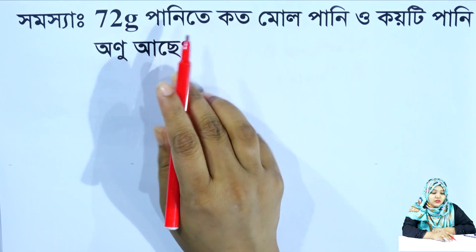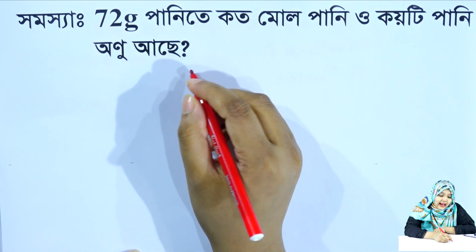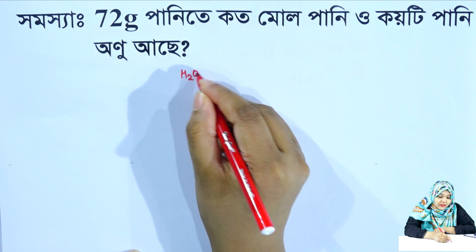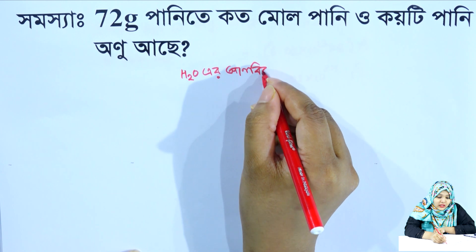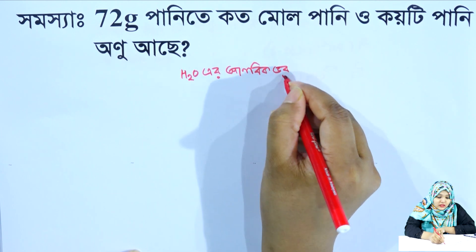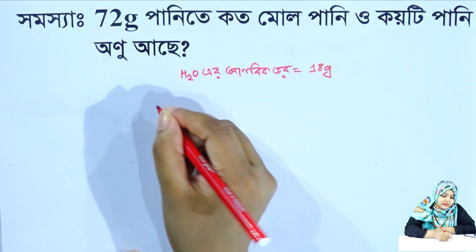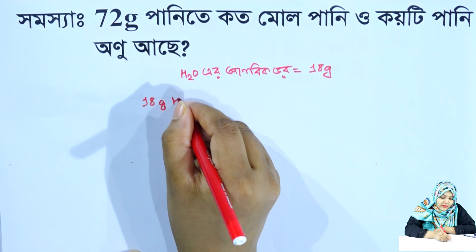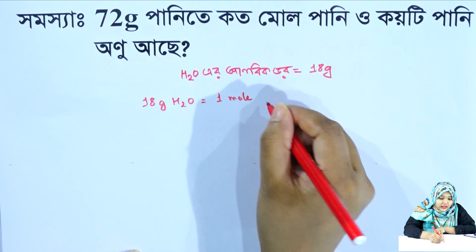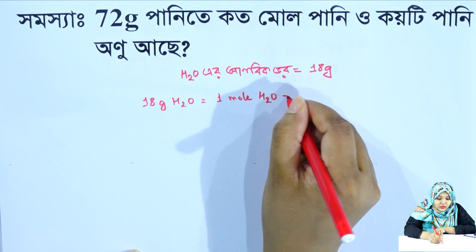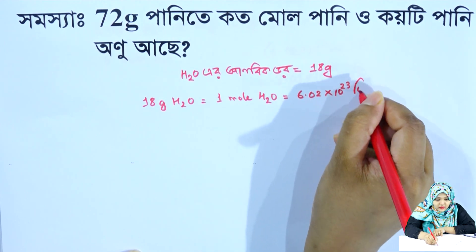The second part: 7.02 gram of water. 1 mole is equal to 6.02 into 10 to the power 23 molecules.